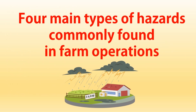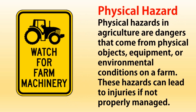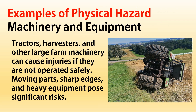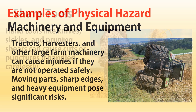Here are the four main types of hazards commonly found in farm operations. Physical hazards in agriculture are dangers that come from physical objects, equipment, or environmental conditions on a farm. These hazards can lead to injuries if not properly managed. Machinery and equipment — tractors, harvesters, and other large farm machinery can cause injuries if not operated safely. Moving parts, sharp edges, and heavy equipment pose significant risks.